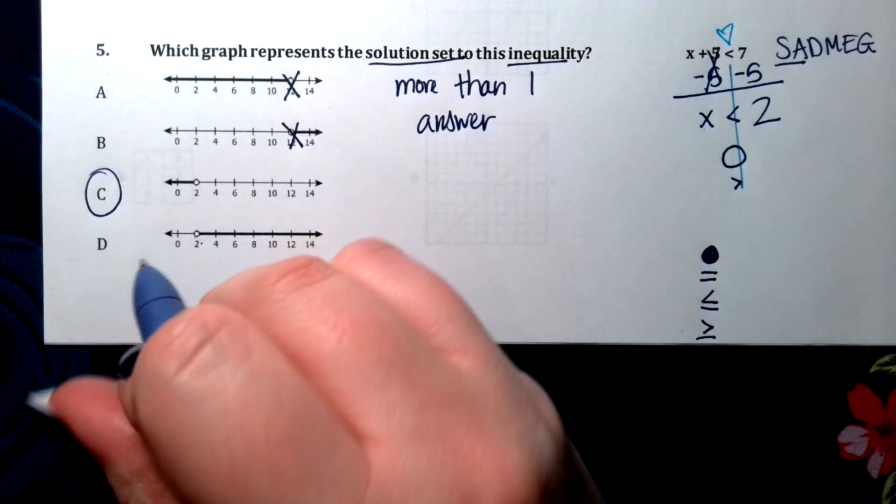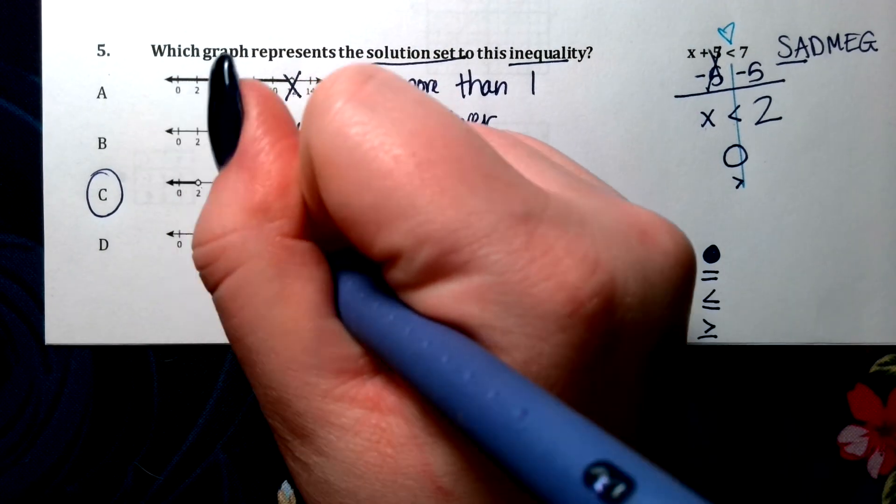C. D shows all these numbers that are greater than 2. So that is not right.